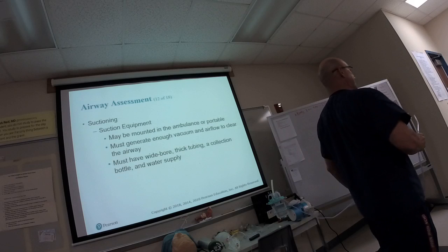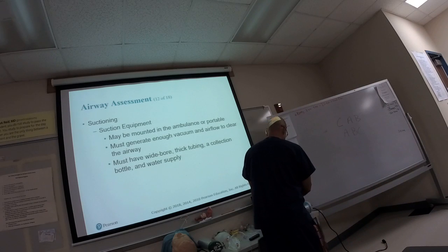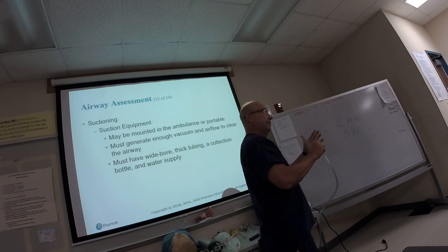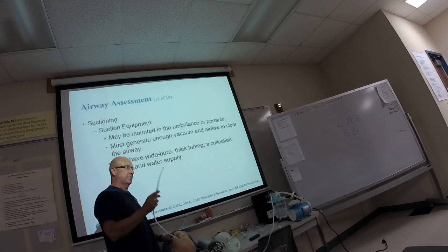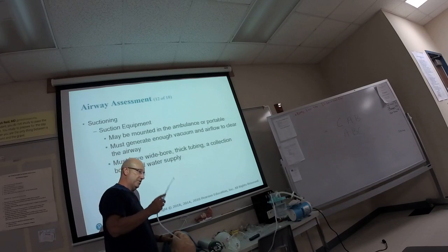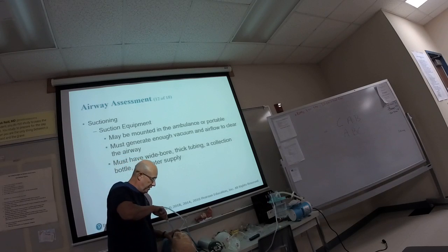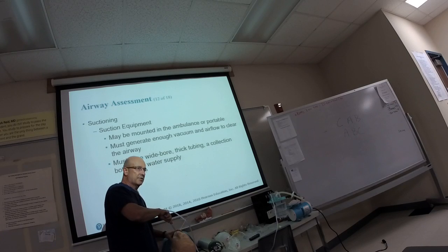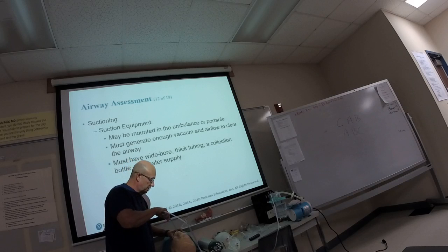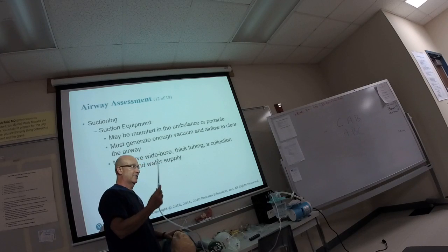When it's time to suction, turn on the unit and make sure you have power and suction. Come to the patient, open the airway. If it's continuous suction, suction on the way in; without continuous suction, suction on the way out. Look at what you're suctioning, go in, and suction back and forth. The time limit is 10 to 15 seconds — it depends on the reference, but go with 15 seconds. Once you clear the airway obstruction, stop suctioning.